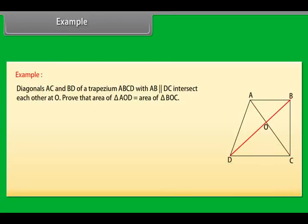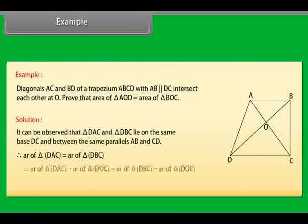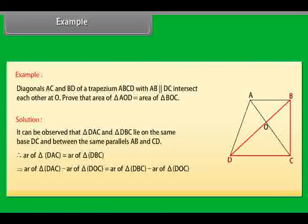Diagonals AC and BD of a trapezium ABCD with AB parallel to DC intersect each other at O. Prove that area of triangle AOD equals area of triangle BOC. Solution: It can be observed that triangles DAC and DBC lie on the same base DC and between the same parallels AB and CD. Therefore, area of triangle DAC equals area of triangle DBC, which implies area of triangle DAC minus area of triangle DOC equals area of triangle DBC minus area of triangle DOC. This implies area of triangle AOD equals area of triangle BOC.